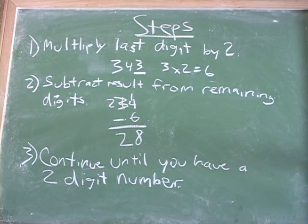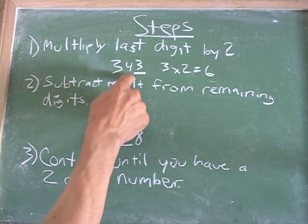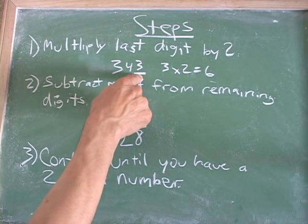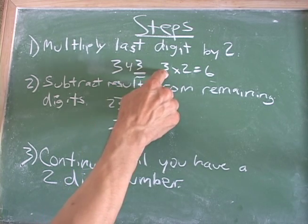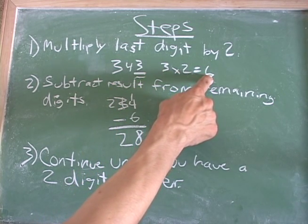Okay, and just to take a look at the steps in this one last example, basically the steps you're going to do is you're going to multiply the last digit by 2. So here our example here is 343. We're going to take this last digit here, which is a 3, and multiply that by 2, and we get 6. 3 times 2 is 6.